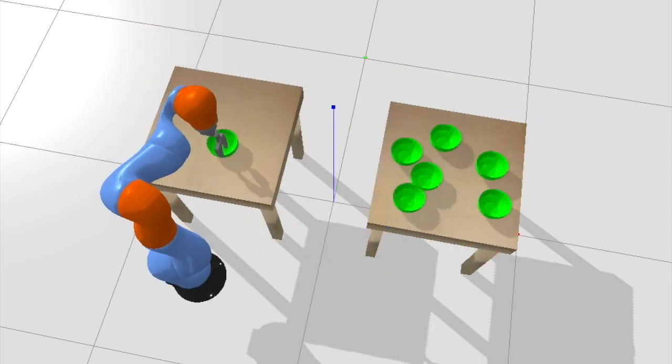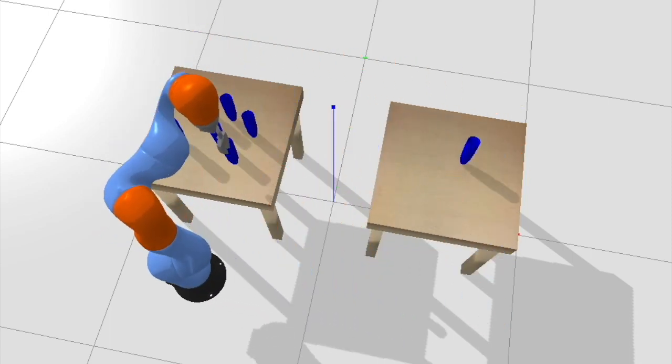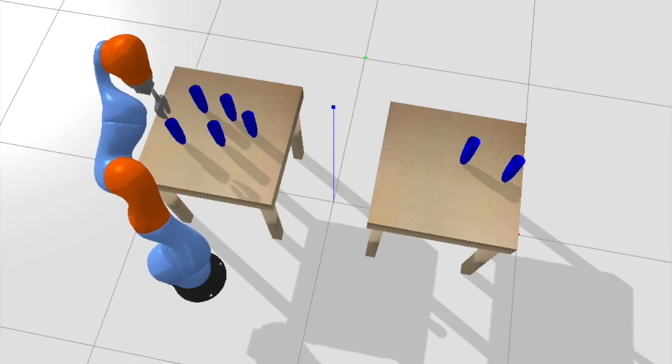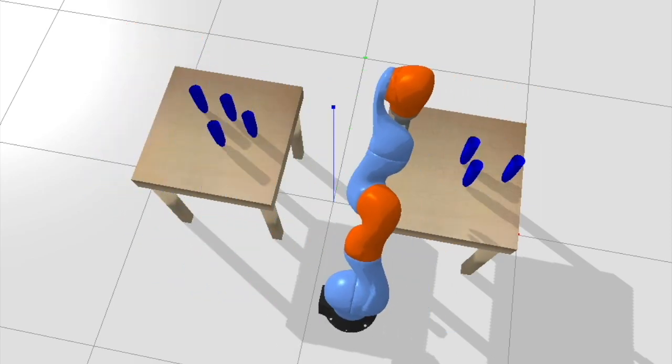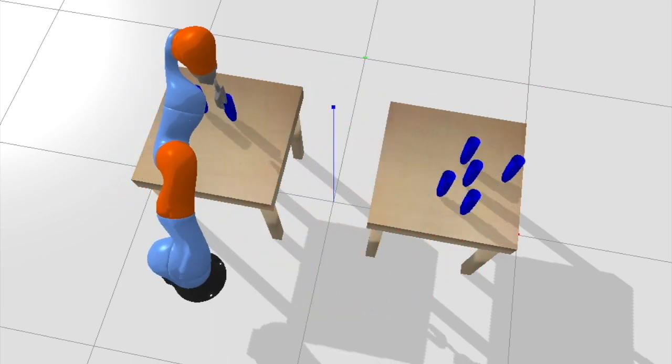The green bowls and blue vases must be lip grasped from above, while the red cylinders must be side grasped. Note that the robot has not seen these particular object geometries at all during training, but the specializer weights were fine-tuned for these new tasks on very little data.